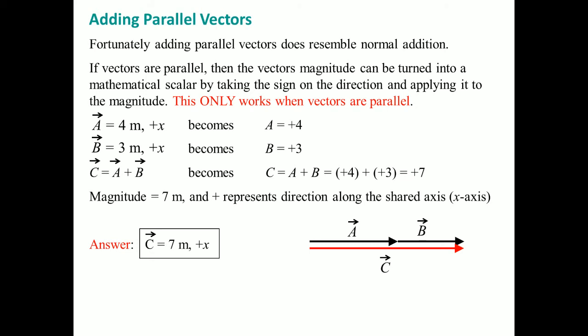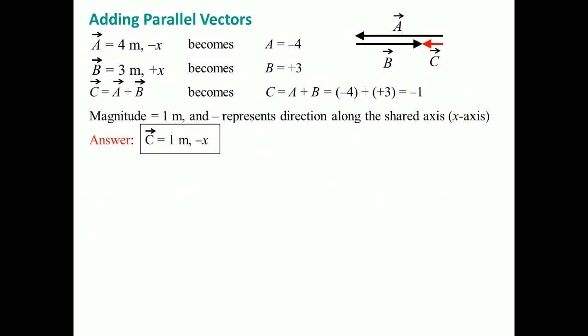Sometimes you might get lucky when they're parallel vectors and you could just add it like this. Remember this only works when the vectors are parallel. Sometimes you might see when it has a negative value. In this case notice that the 4 is in the negative direction so it is negative 4 plus 3 that equals negative 1. You could say that this still has 1 meter magnitude, but they put the negative x direction and this just gives the direction to it.